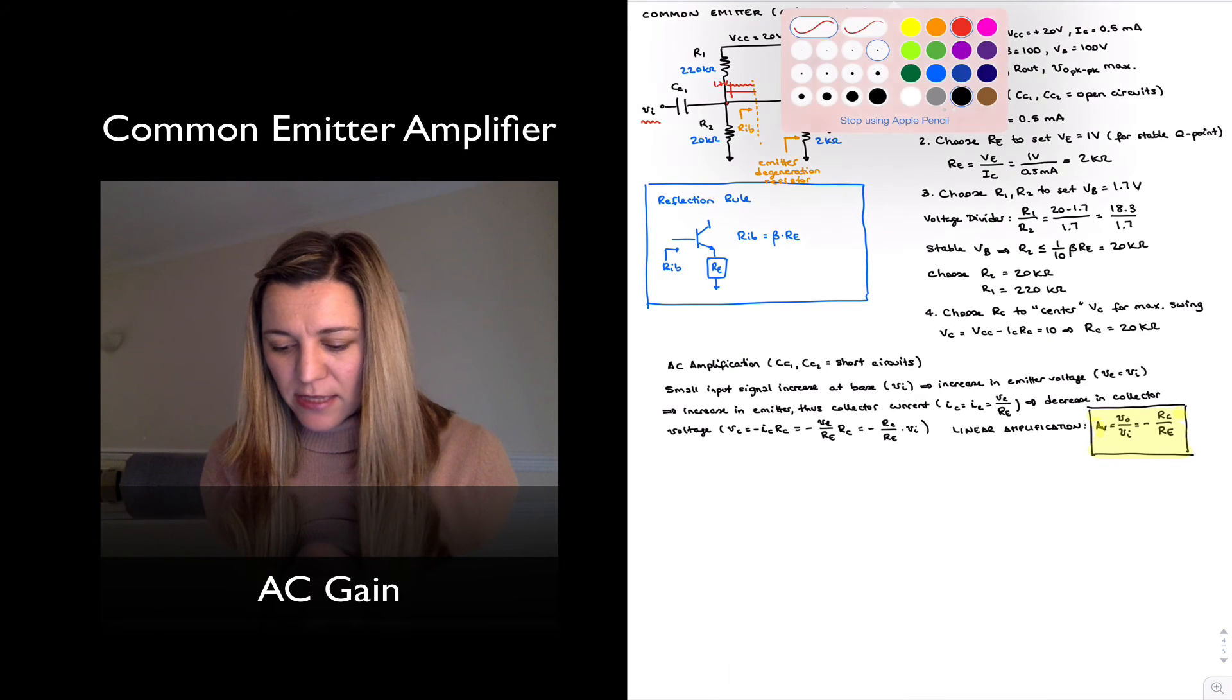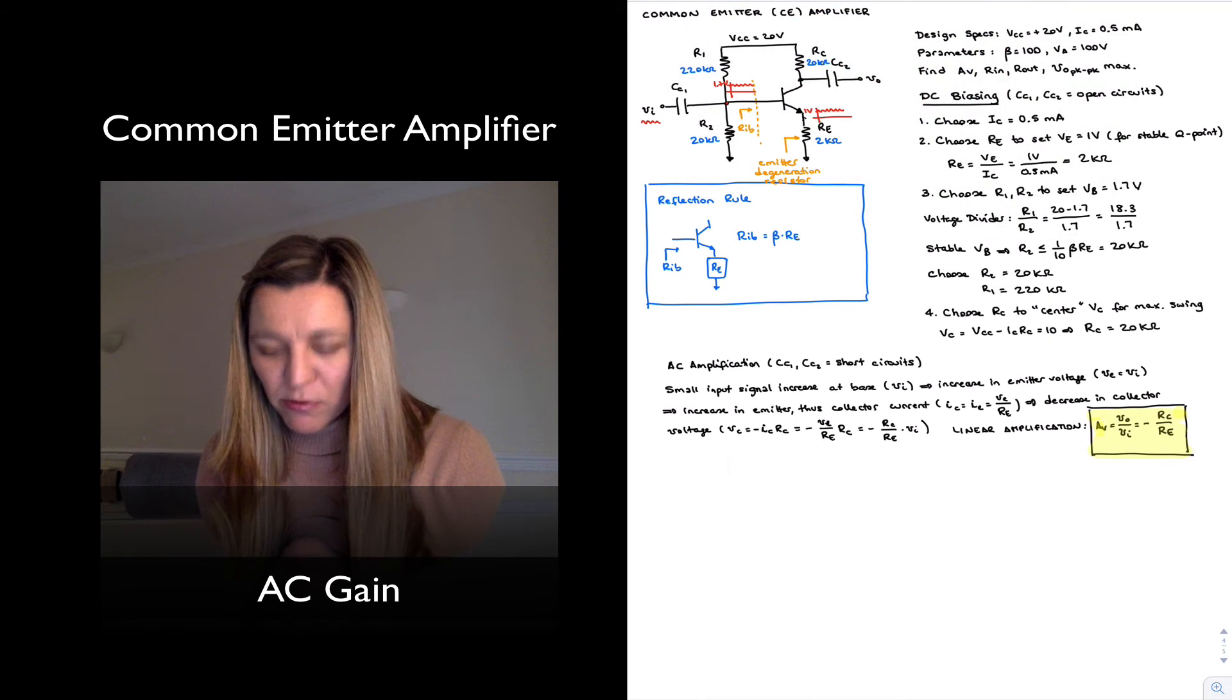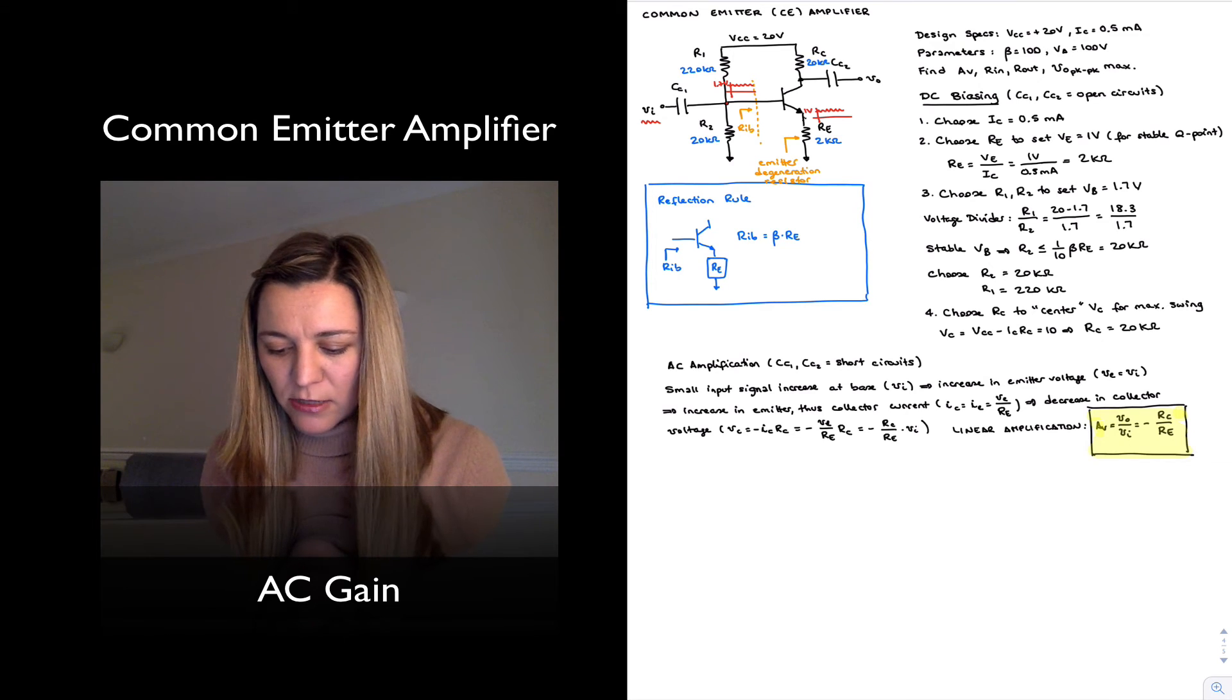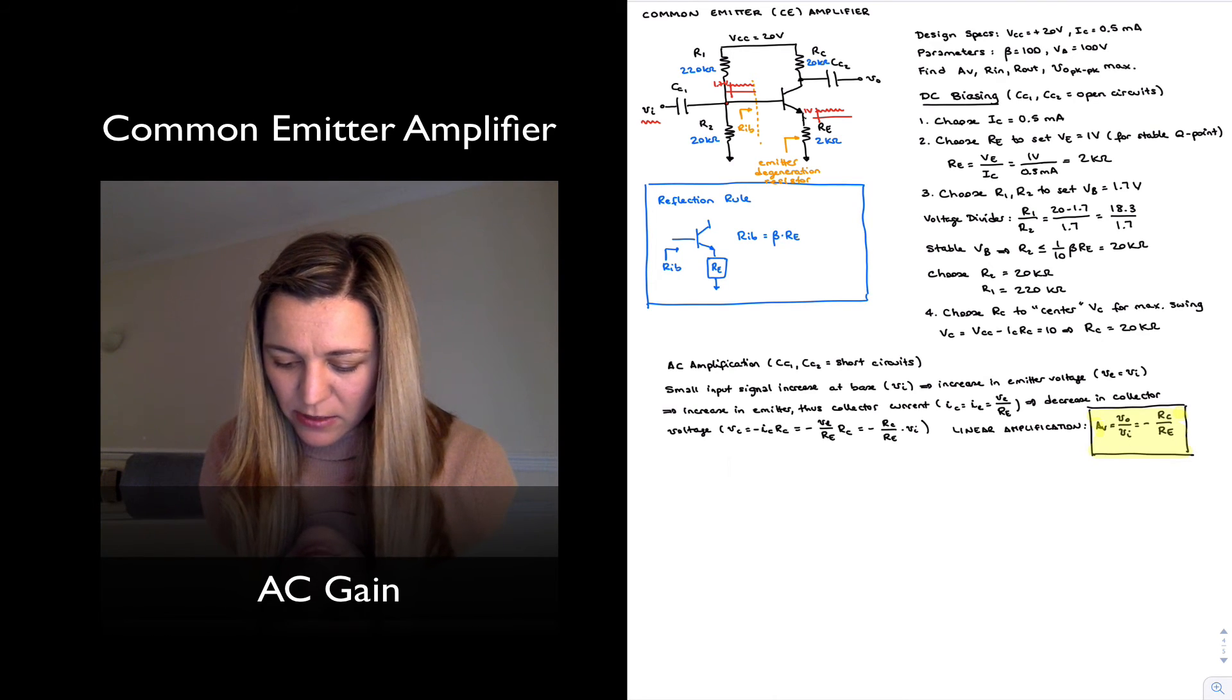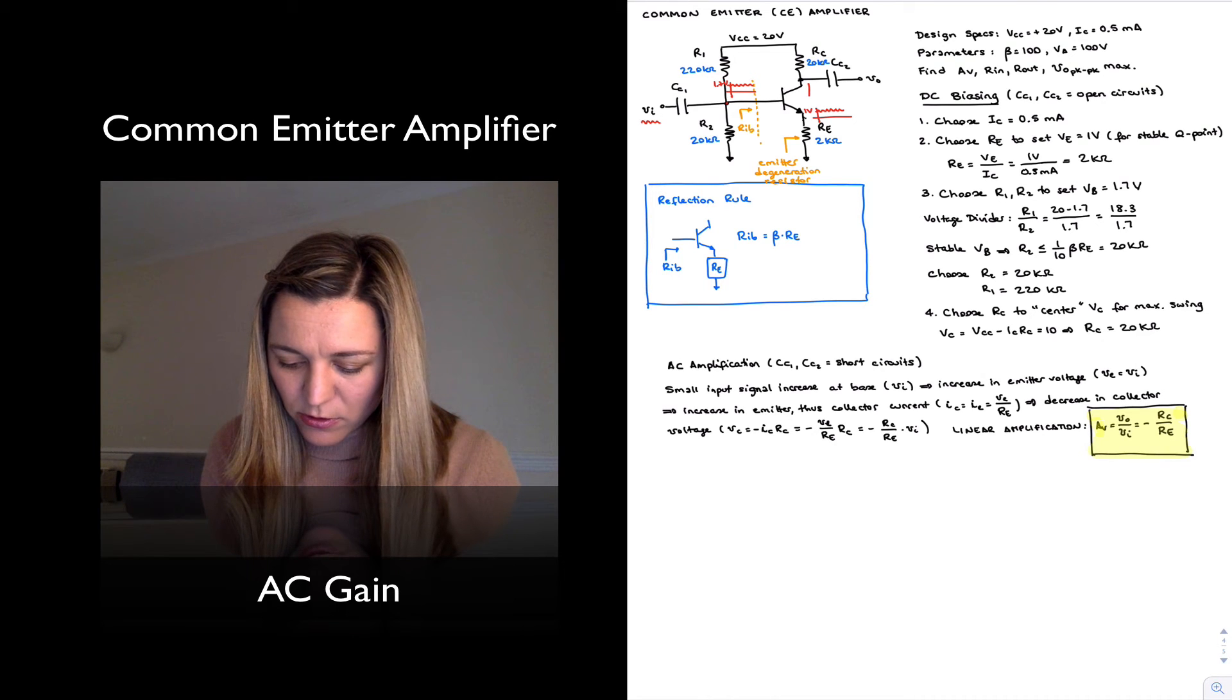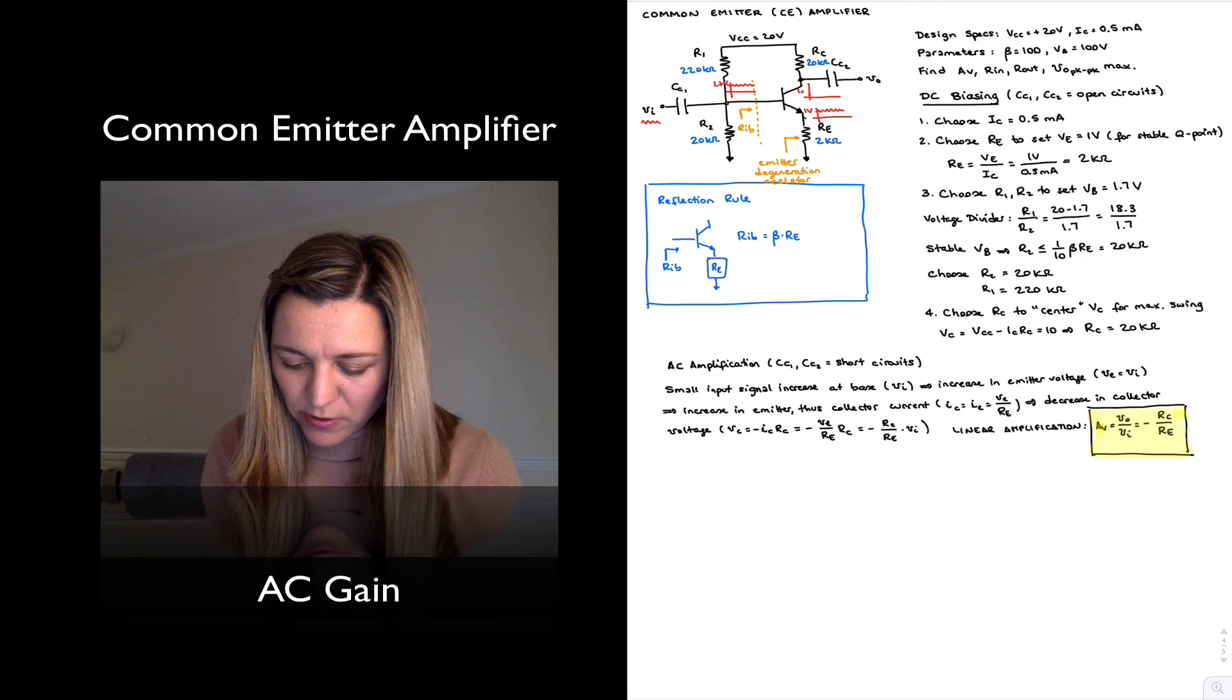I can represent that in the figure. We were representing this wiggle that was now centered around 1 volt. My collector is centered around 10 volts, and so I expect that at my collector output, I'm going to get, it's going to be difficult to draw, but around 10 volts, a signal that is inverted and amplified.